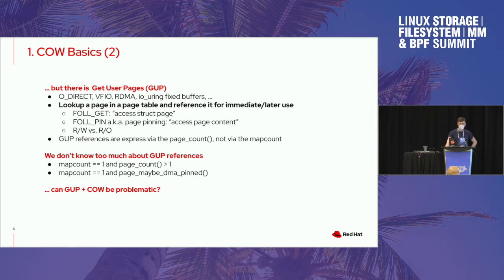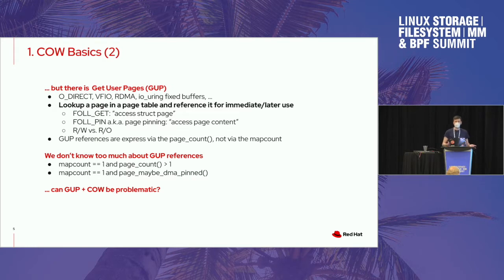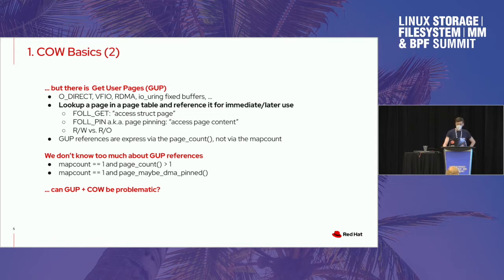When we only take a look at the map count and the page count, we don't know too much about Get User Page references. For example, map count is one but the reference count is bigger than one — what is that other reference? Where is it from? Is it a read-write reference, a read-only reference, is it a GUP reference, or just some other reference from the operating system? We don't really know that. So the question is, can both things paired be problematic? And I wouldn't be here if it weren't problematic — so it is.